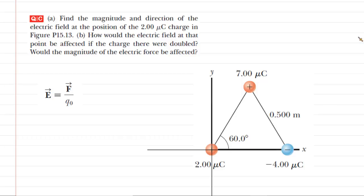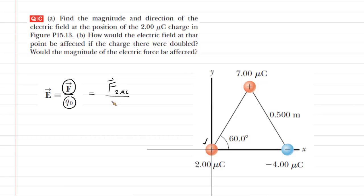In part A, we are asked to determine the magnitude and direction of the electric field at the position of this two microcoulomb charge. One way would be to find the magnitude and direction of the electric force acting on the two microcoulomb charge and then divide that force by the amount of charge, which is two microcoulombs. That's the approach we're going to take here.